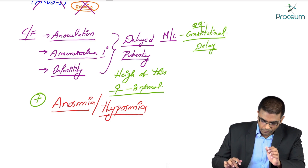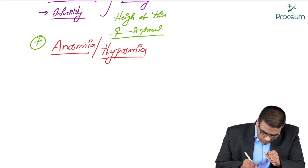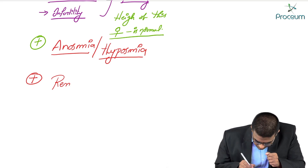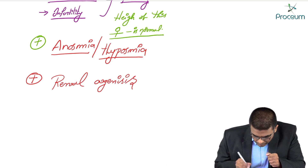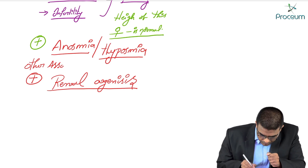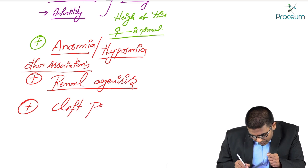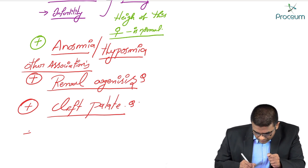Some females with Kallmann syndrome can be associated with other abnormalities. These other associations include renal agenesis, cleft palate, and color blindness.